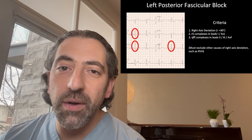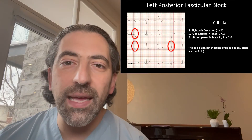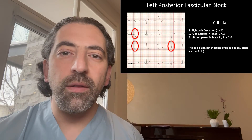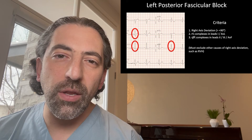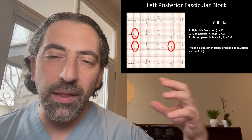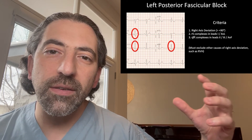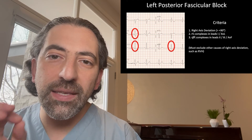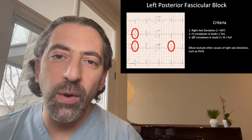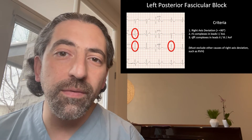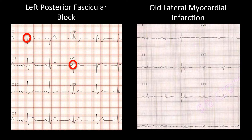It is important to distinguish left posterior fascicle block from another cause of right axis deviation, which is a lateral wall myocardial infarction. When there is a lateral wall MI, scarring on the lateral wall reduces the electrical vector moving from right to left, creating absence of the initial R wave or a Q wave in leads 1 and AVL. A patient with an old lateral infarct will show no R wave in leads 1 and AVL, simply starting with a Q wave, distinguishing it from left posterior fascicular block.